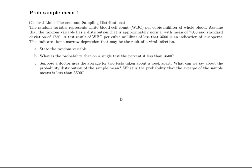Here's another sample problem from a Catherine Kozak video. We're looking at measuring white blood counts per milliliter of whole blood. We're going to assume that the random variable has a distribution that is approximately normal with a mean of 7500 and a standard deviation of 1750. If somebody tests this blood and the result is less than 3500, it's an indication of disease — possibly bone marrow depression as a result of viral infection. So it's an important test, more like a written homework assignment.